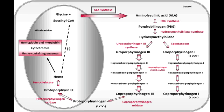For example, Uroporphyrinogen Decarboxylase is associated with Porphyria Cutanea Tarda, whereas Porphobilinogen Deaminase is associated with Acute Intermittent Porphyria.